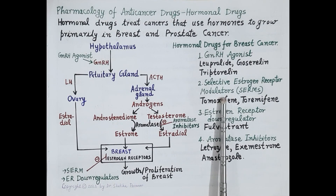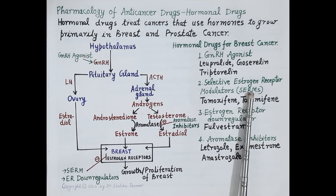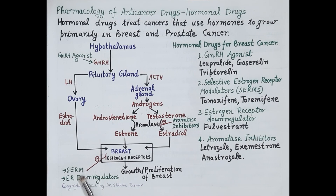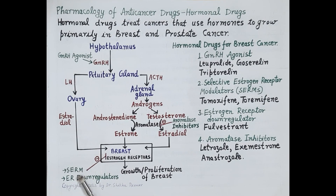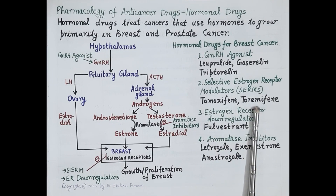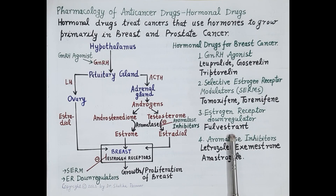The next category are selective estrogen receptor modulators, or SERMs. These drugs selectively block estrogen receptors in the breast, thereby preventing growth and proliferation of breast cells. The main advantage of SERMs is that they do not antagonize the effect of estrogen on the uterus, bones, and heart, so positive effects like increased bone density and cardioprotection are retained. Drugs in this category include tamoxifen and toremifene.